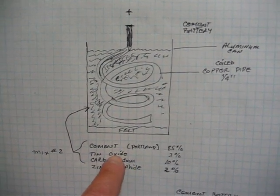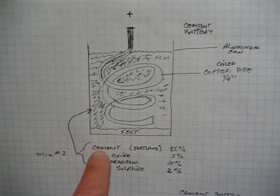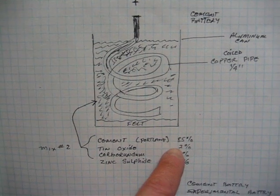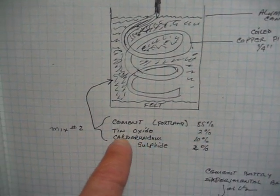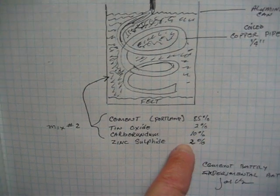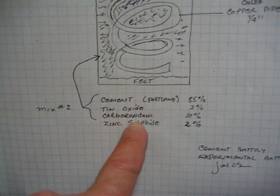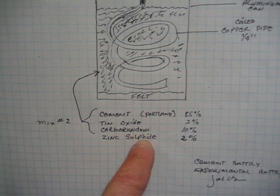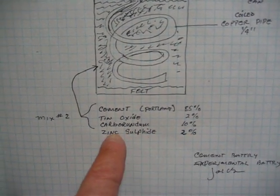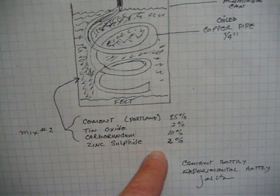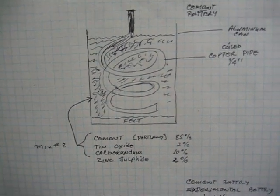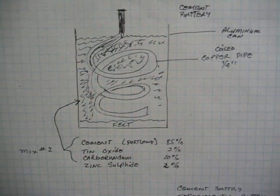First of all, I used Portland cement at about 85%, and then I added some tin oxide to that at about 2%, and carborundum, which is a rock-grinding compound, at about 10%, and then some zinc sulfite at 2%. I don't have much of that left, so I am sort of sparing that.